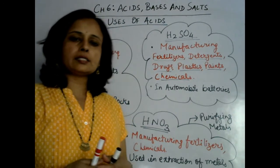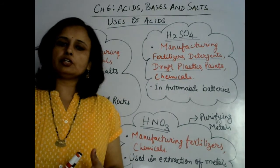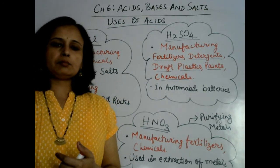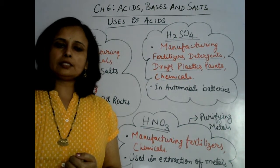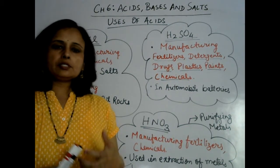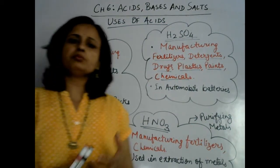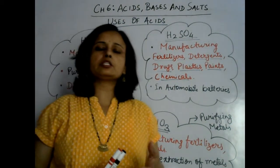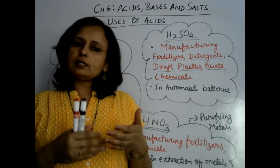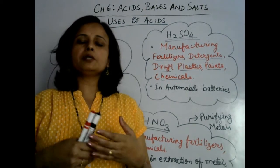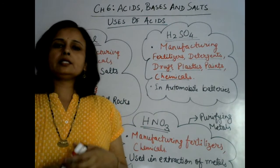Now next is nitric acid. Nitric acid is utilized in manufacturing of fertilizers and chemicals. At the same time, it is used in extraction of metals. Many metals are found in their ore form, and extraction of metal from its ore is done by using nitric acid.